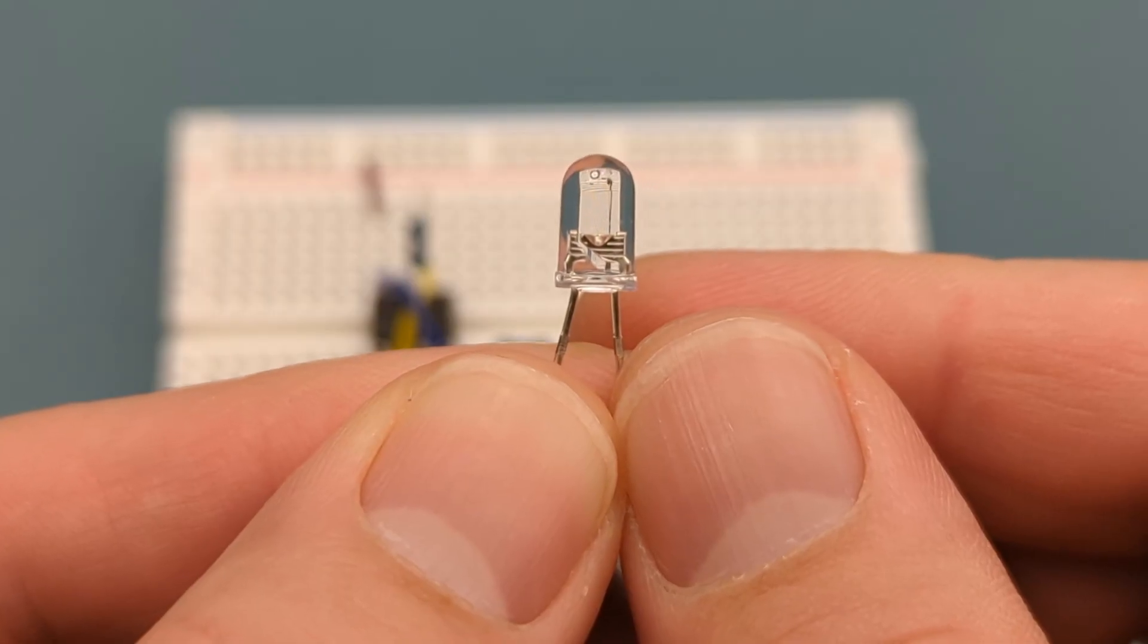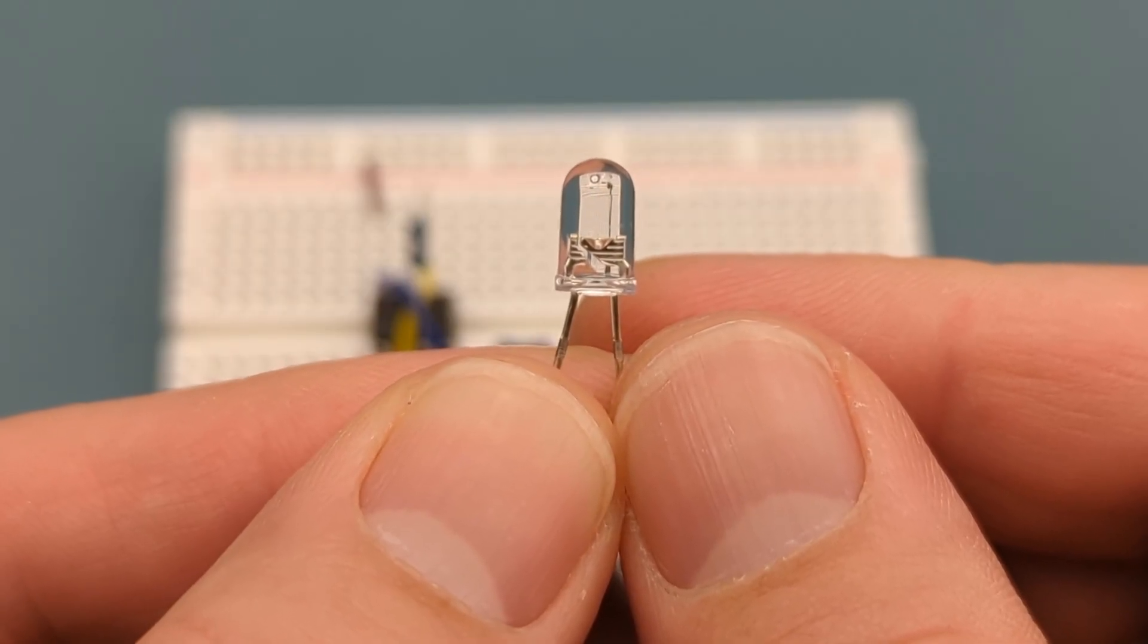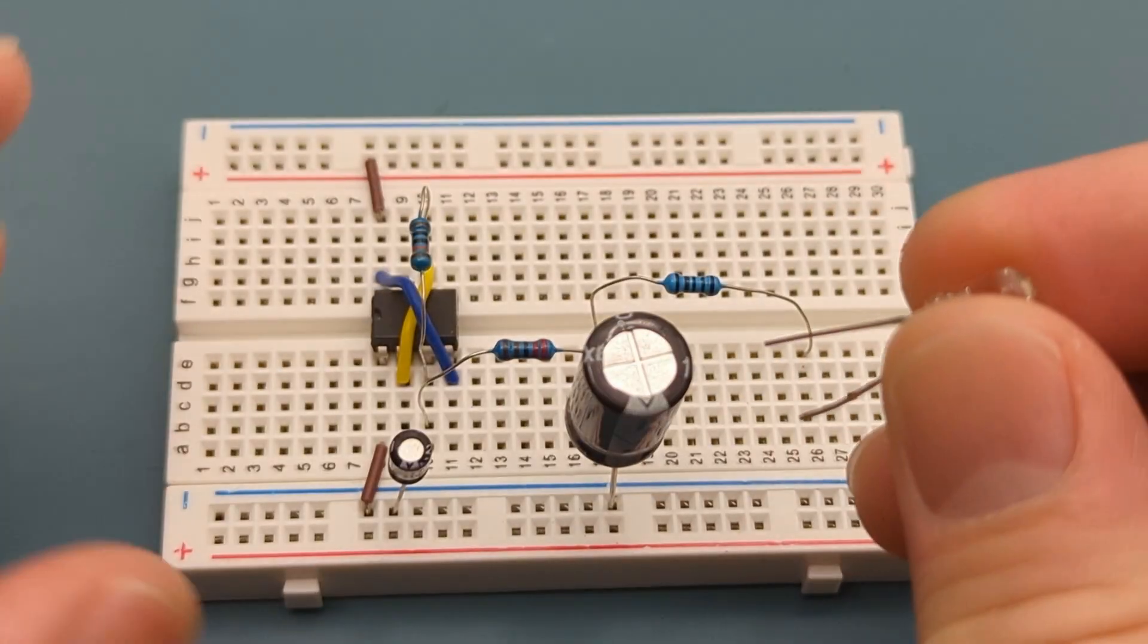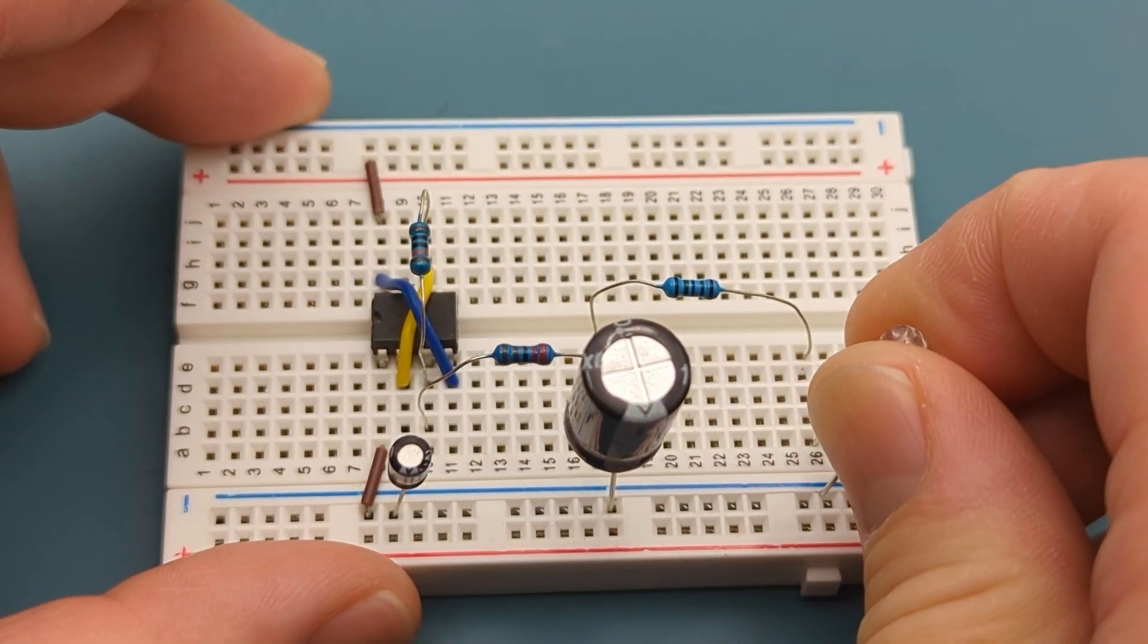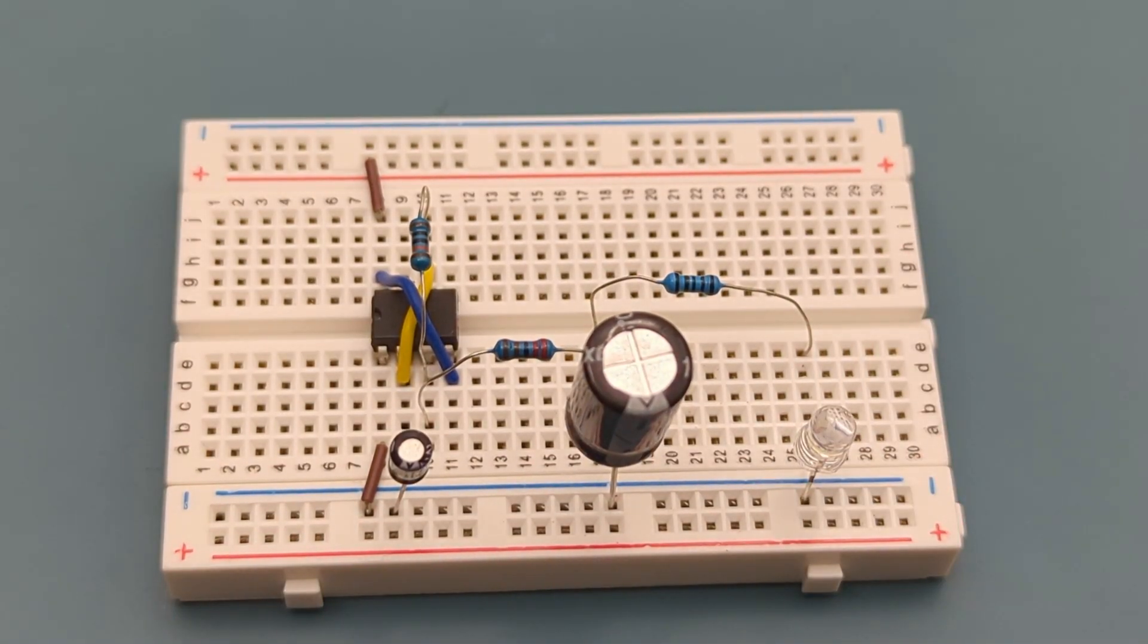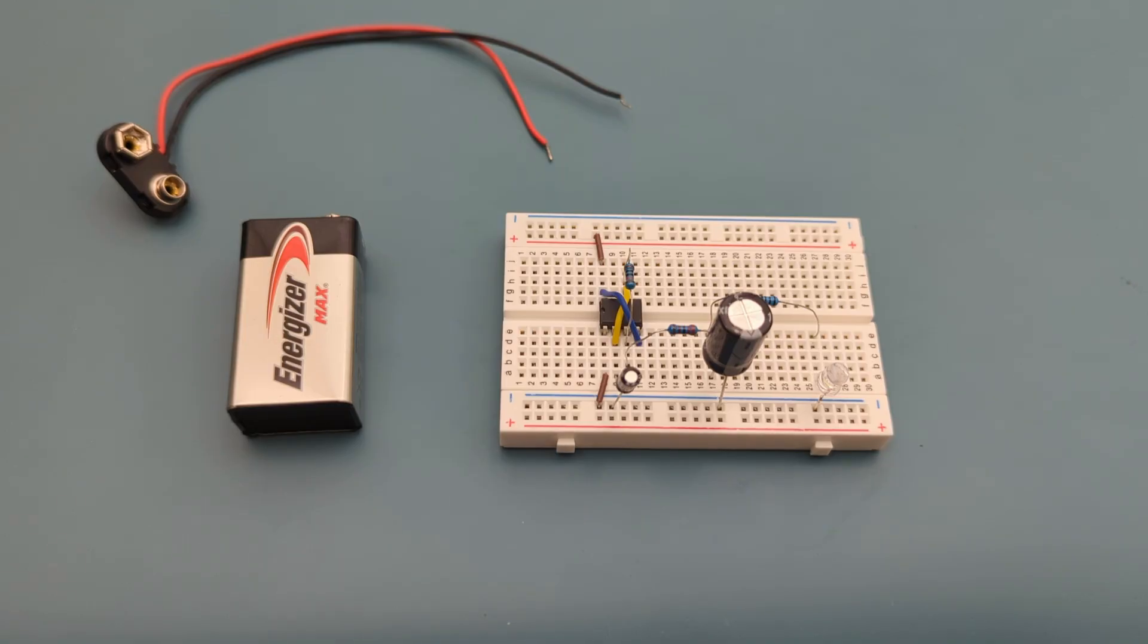Insert a white LED into the same row as the 100-ohm resistor and the negative rail. The anode is in the same row as the resistor. Attach the buckle connector to the 9-volt battery.